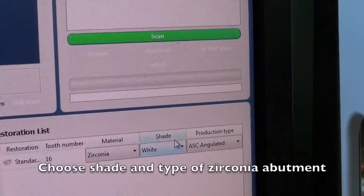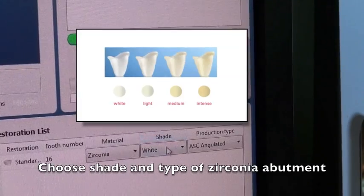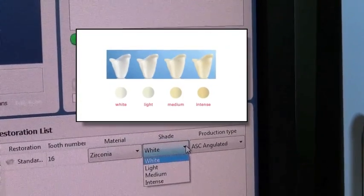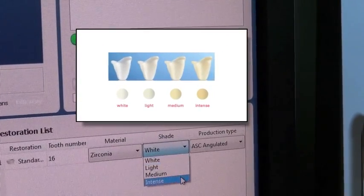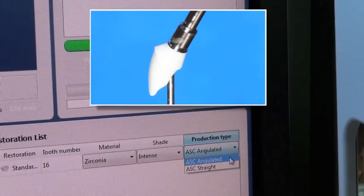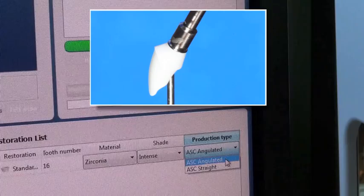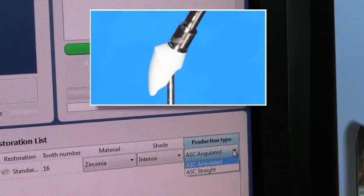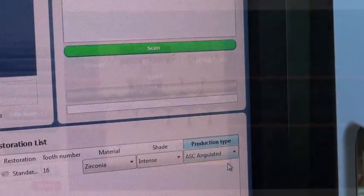During our first scan we're going to choose the shade—in this case we're going to pick the intense, so we have four choices right now. Then we're also going to pick either angulated or straight, so we're going to pick angulated on this case. You can see in the window it actually makes it so we can angle it up to 25 degrees.